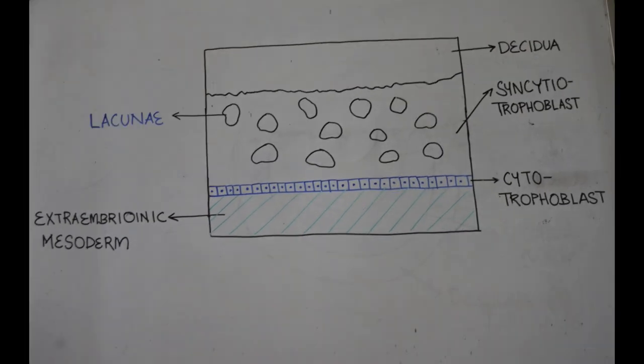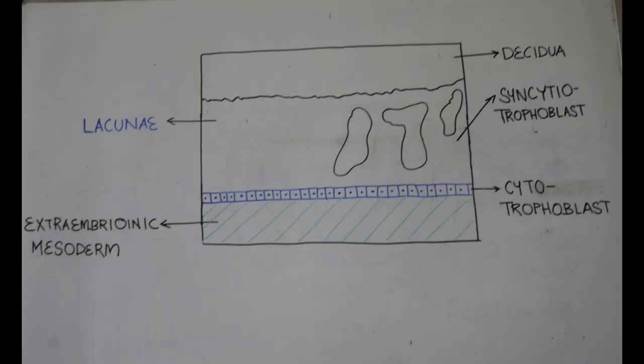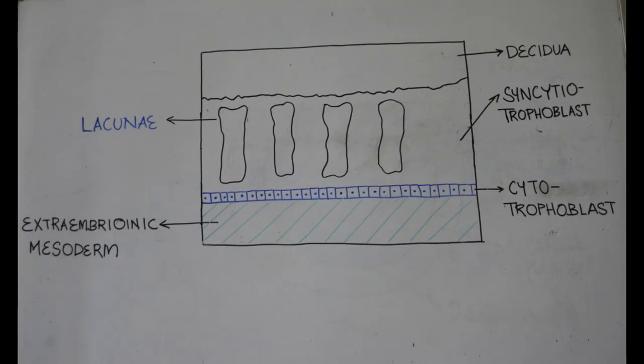Gradually the lacunae increase in size. At first they are irregularly arranged, but gradually they come to lie radially around the blastocyst. The lacunae are separated from one another by partitions of syncytium which are called trabeculae.